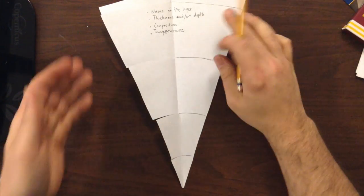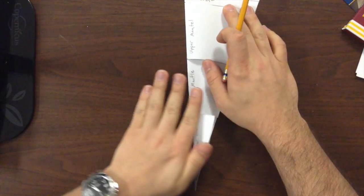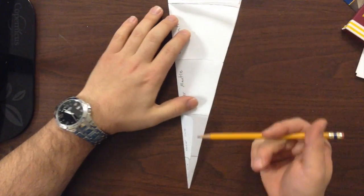So once you get all this done, you close it up, give the outside some color, and glue it into your science notebook.